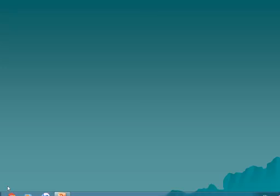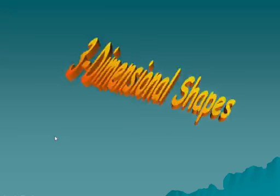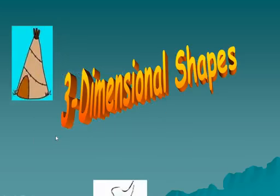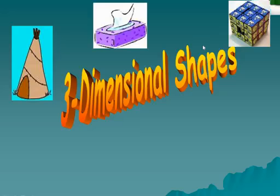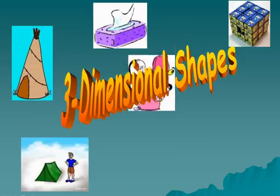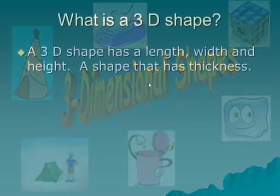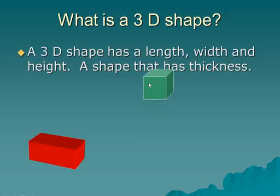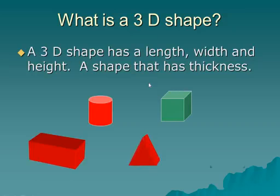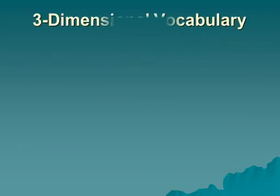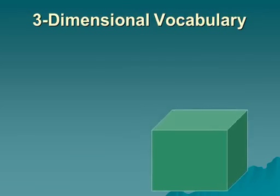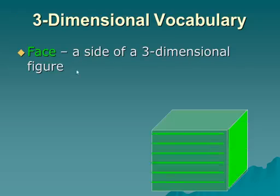Welcome, this is lesson 11.2 and today we're going to complete talking about three-dimensional shapes. As we see here, these are some objects which describe three-dimensional shapes. A 3D shape has length, width, and height — a shape that has thickness. You can see how they each take up space, and today we will talk about some features or attributes which describe the 3D shape.